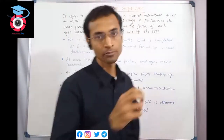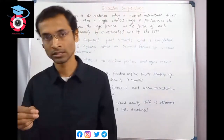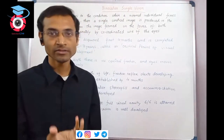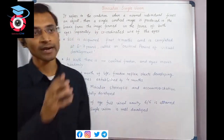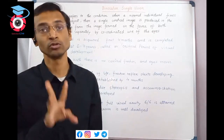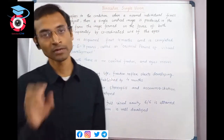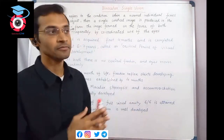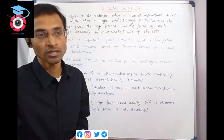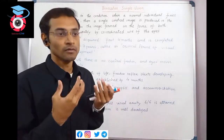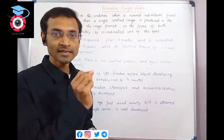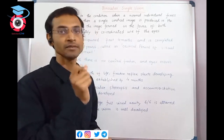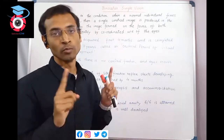When we talk about binocular single vision, we consider what we see simultaneously and symmetrically on one side. This is the process - the type of visual perception by which we can focus on a single object and produce a single mental impression. This image is a single image formed with the help of both eyes.